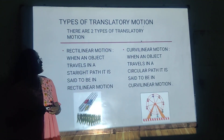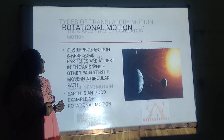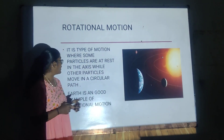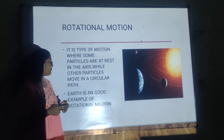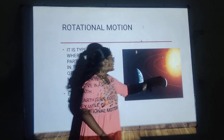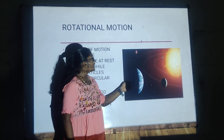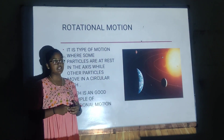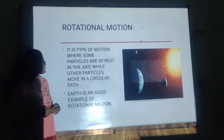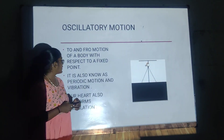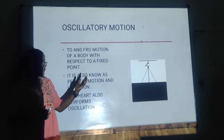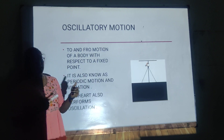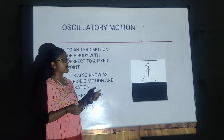Now let us see what is rotational motion. It is a type of motion where some particles are at rest with the axis while other particles move in a circular path. Here in this image, the sun is at the axis and the earth is rotating around the sun — a good example of rotational motion. Oscillatory motion is a type of motion where the particles move back and forth. A pendulum is a good example, and our heart also performs oscillatory motion.